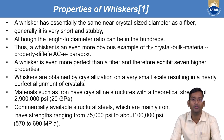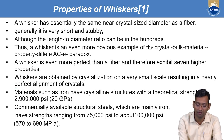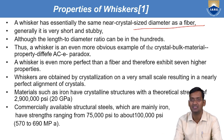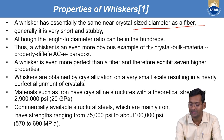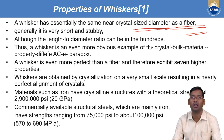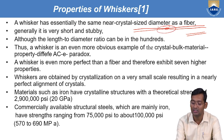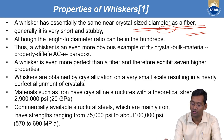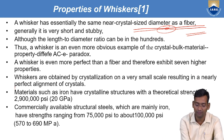Whisker is obtained by crystallization on a very small scale, in a nearly perfect alignment of the crystal. For longer length — in case of fiber — it is difficult to maintain alignment over a long distance. But in case of whisker, it is easier, because the length is shorter. That is why nearly perfect alignment of the crystal is there in whiskers, compared to fiber.